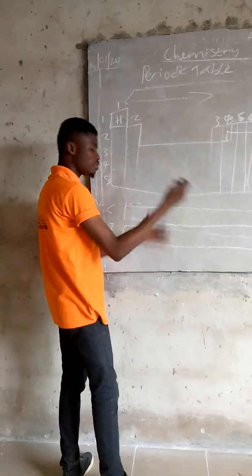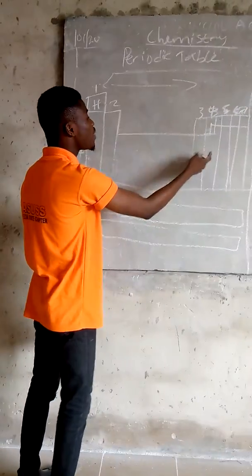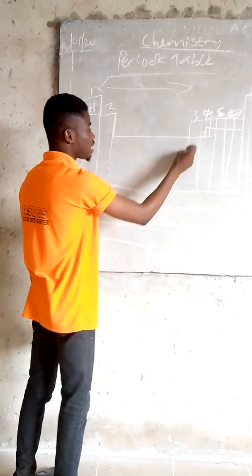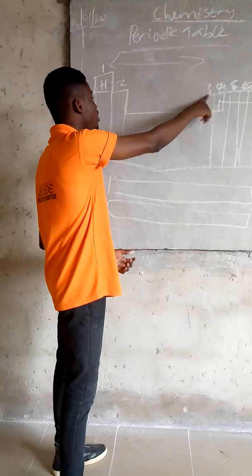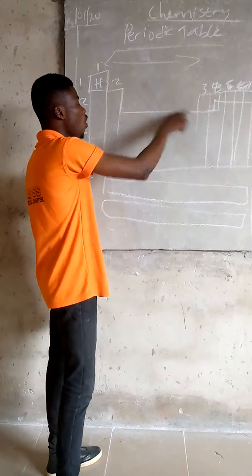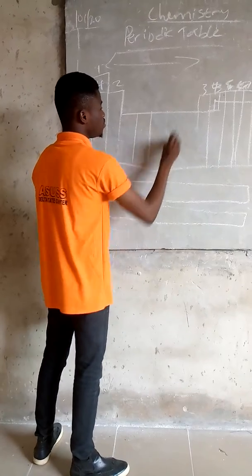Now at the middle of Group 2 and Group 3 we have the transition metals. They are all metals. In between Group 2 and Group 3 we have the transition metals. All the elements here are metals.